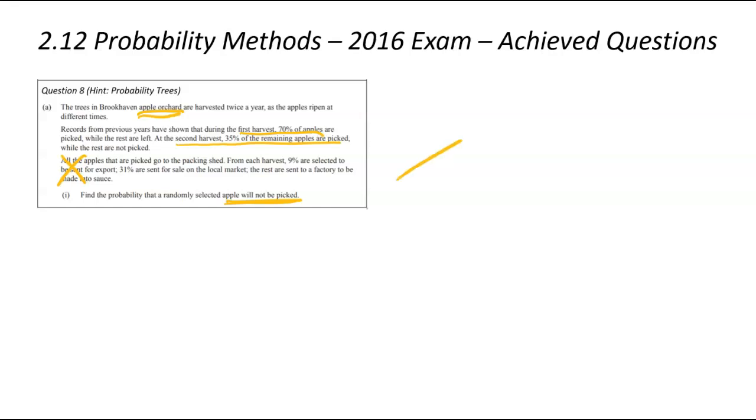So during our probability tree, we're going to split it off. And this first event is going to be the first harvest. At that harvest, you could be picked. So that's P. And P dash, don't forget, that little dash means not. So not picked. We've been told 70% of them will be picked. So that there will be 0.7. That means the remaining ones, 0.3, are not picked.